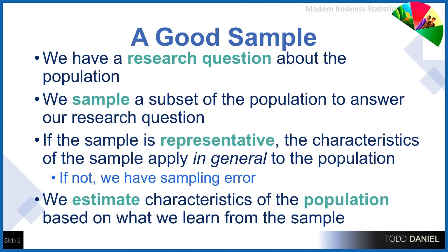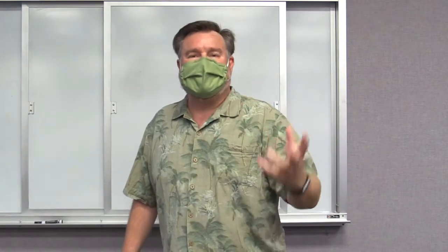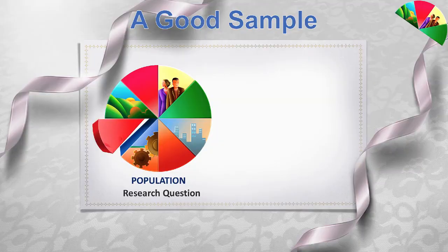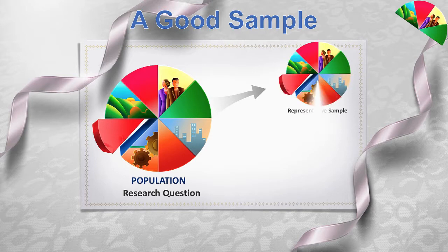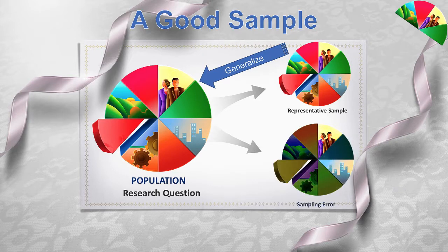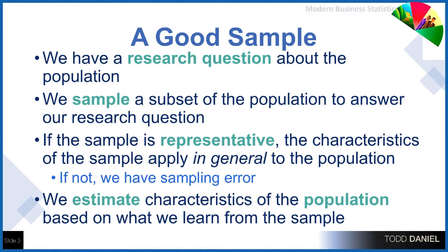What would it mean to have a good sample? We have a population and a research question about that population — we want to know the average height, weight, IQ, shoe size, or personality measurement. We sample a subset of that population, a smaller group drawn from it, in order to answer our research question. If our sample is representative — if it looks like the population — then the characteristics of the sample will apply, in general, to the population. It's possible to have a non-representative sample, which would occur if we have sampling error. What we do is take what we learned from our sample and apply it to estimate the characteristics of the population.